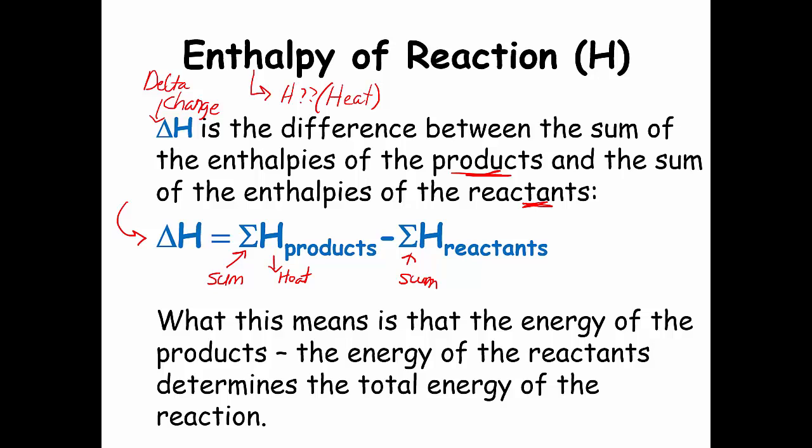So it's always products minus reactants, which means you are reading it backwards when you're doing this. Products minus reactants. So the rest of this unit, we're actually going to find different ways to calculate delta H. At the end, we're going to have four different ways we can calculate delta H. What are we going to have? Kind of foreshadowing.